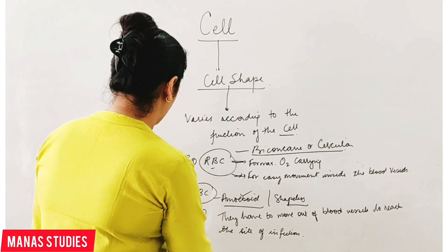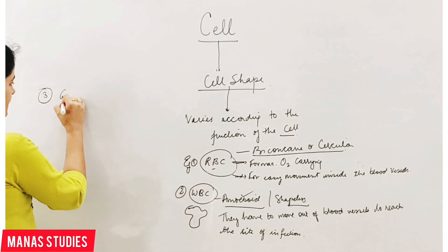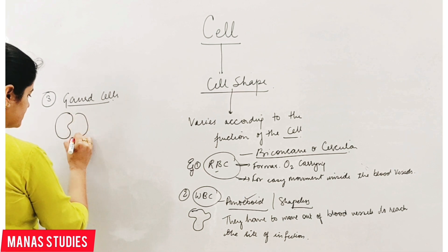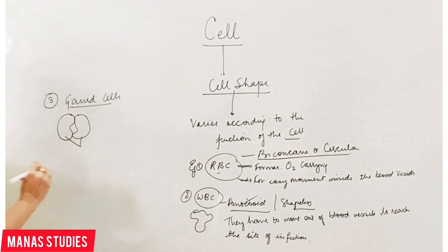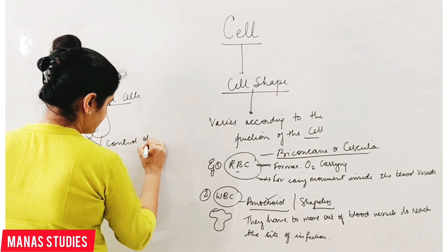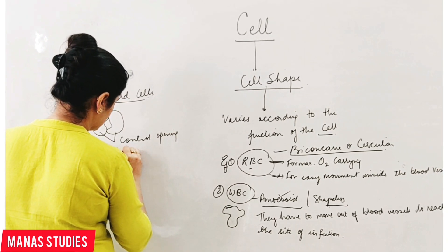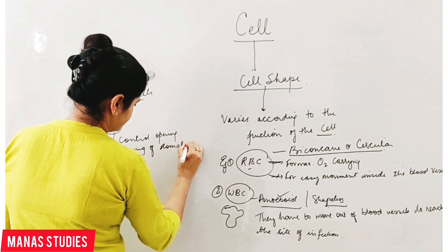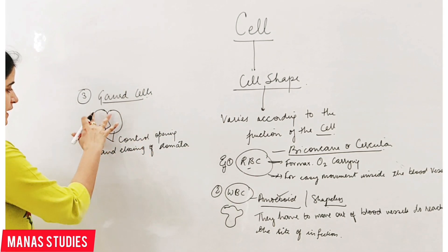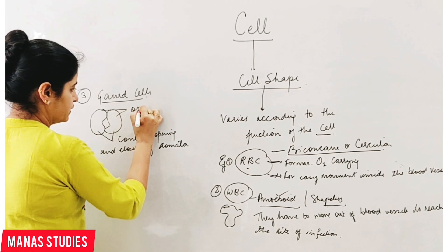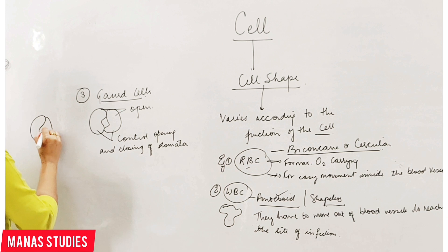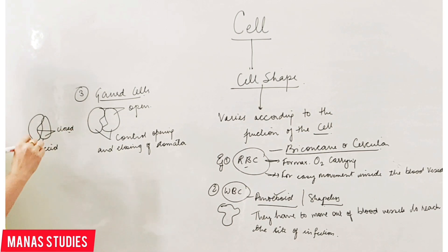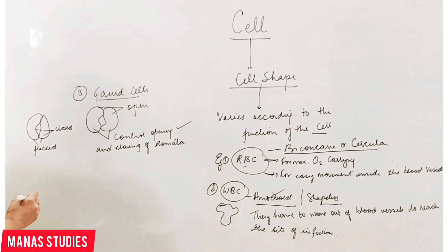Third example: guard cells. Guard cells are bean-shaped or kidney-shaped cells. Their function is to control the opening and closing of stomata. When they are fully turgid, meaning fully arched outwards, stomata are open, and when they are flaccid, stomata are closed. So their function is to control the opening and closing of stomata.